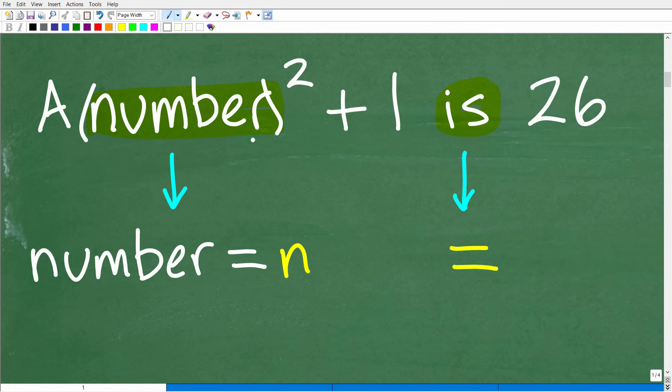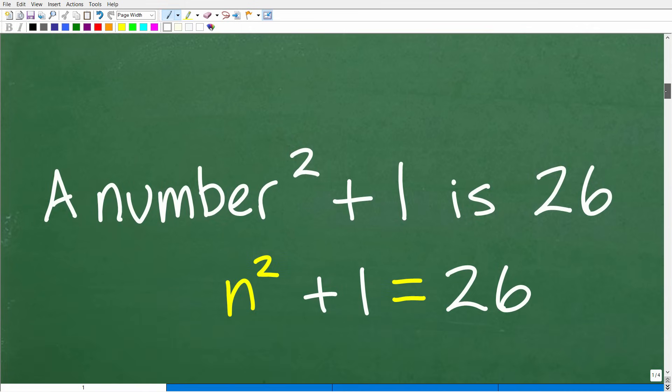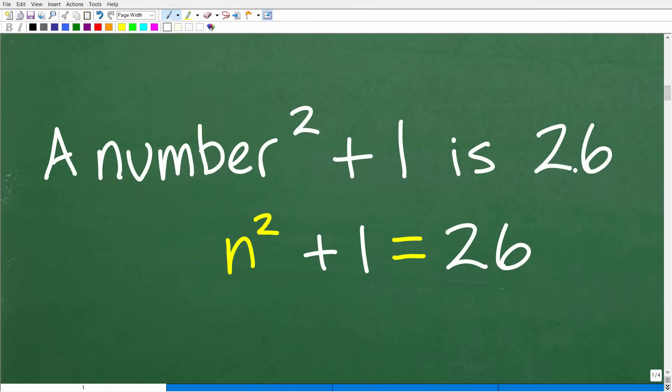A number, we'll use n to represent this number, squared plus 1. That's pretty easy to translate into a mathematical statement. When you see the word 'is', anytime you see the word 'is' in a verbal sentence, that's always the equal sign. So, our equation is n squared plus 1 is equal to 26.